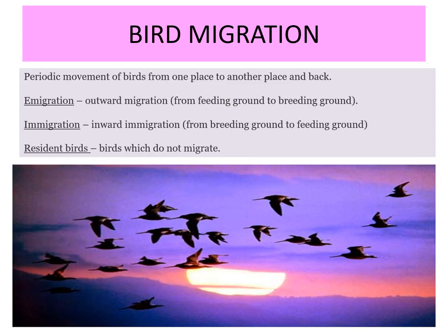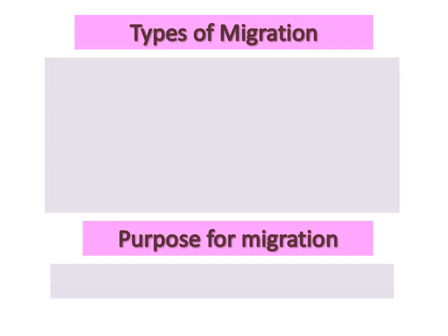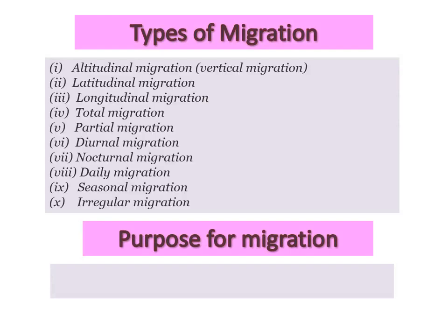Resident birds are those which do not migrate. Now, types of migration. Migration can basically be altitudinal — that is vertical migration — latitudinal, longitudinal migration, total migration, partial migration, diurnal migration, nocturnal migration, daily migration, seasonal migration, and irregular migration.